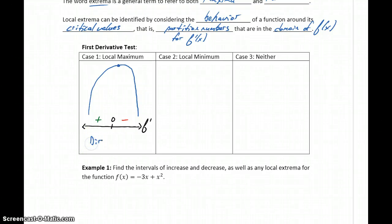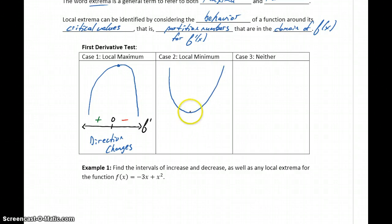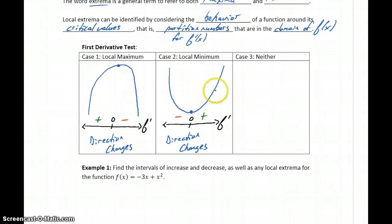That means the direction of our function changes. Our first derivative being positive indicates our function is increasing, and then our first derivative being negative indicates our function is decreasing. So if we change from increasing to decreasing, we end up with a local maximum. For a local minimum, we need to see a function that changes from decreasing to increasing — our sign chart for f prime should show values for the first derivative changing from negative to positive. From increasing to decreasing we get a maximum; from decreasing to increasing we get a minimum.